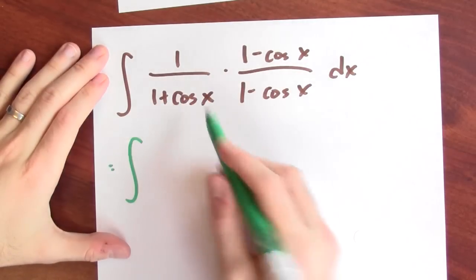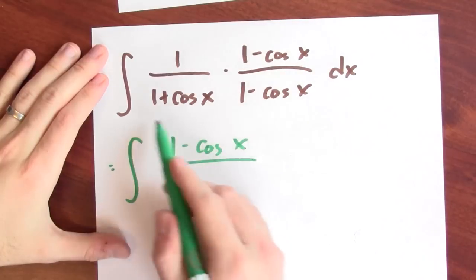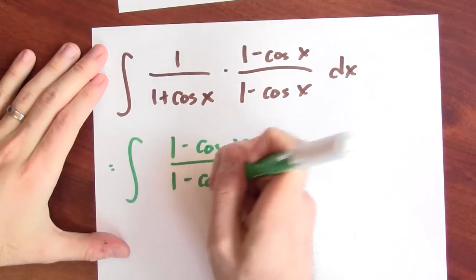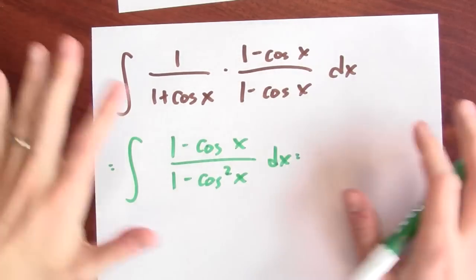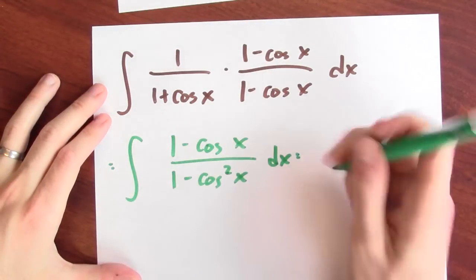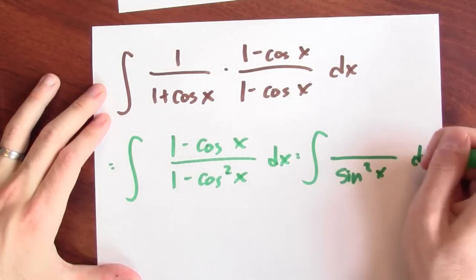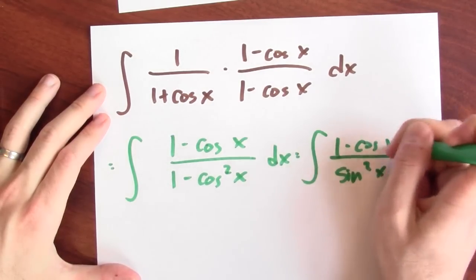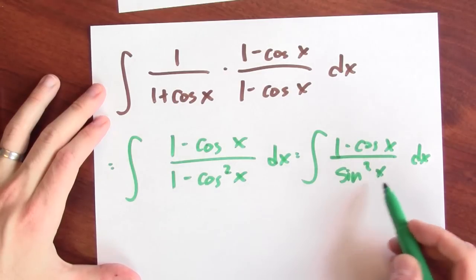Let's first apply a trig identity. So this is 1 minus cosine x in the numerator divided by 1 minus cosine squared x. And the trig identity is that 1 minus cosine squared x is sine squared x. So now I want to anti-differentiate 1 minus cosine x over sine squared x dx.